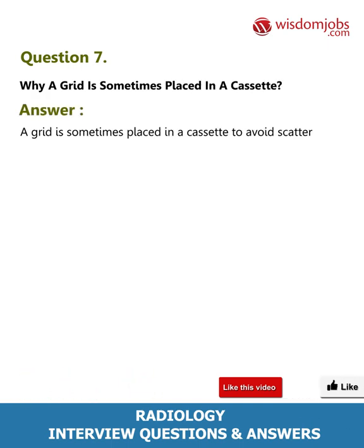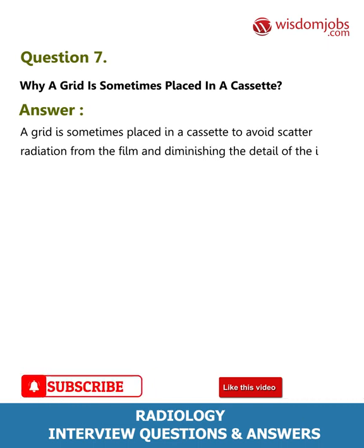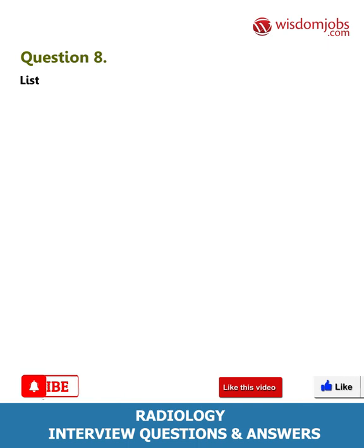Question 7: Why is a grid sometimes placed in a cassette? Answer: A grid is sometimes placed in a cassette to avoid scatter radiation from the film and to reduce the diminishing of detail in the image.